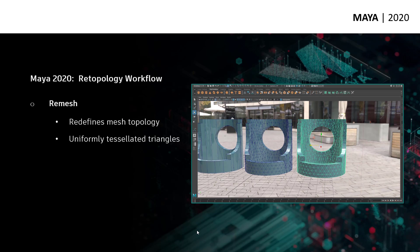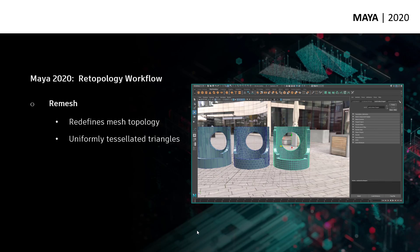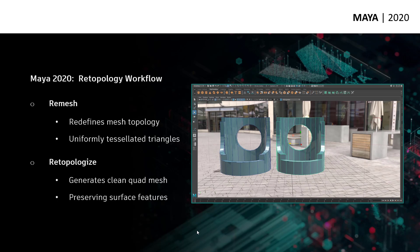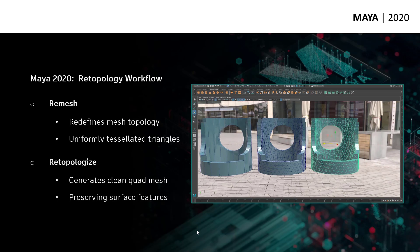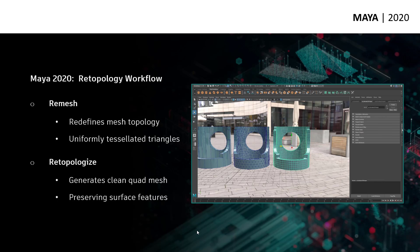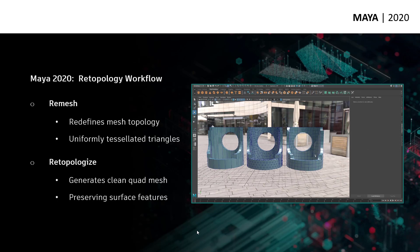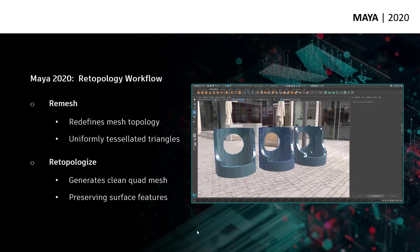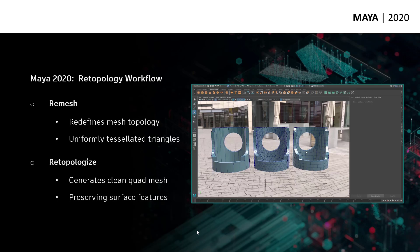And then another feature allows you to clean up that uniform triangulated mesh into a nice clean quad mesh. That allows you to create a nice smooth edge flow and clean topology, but also preserve the surface details at the same time. There are lots of options you can use to set the target face count — 1,000 faces, 2,000 faces, or whatever it may be. And then you can use things like hard edges to define surface details you want to preserve, such as a symmetry line.